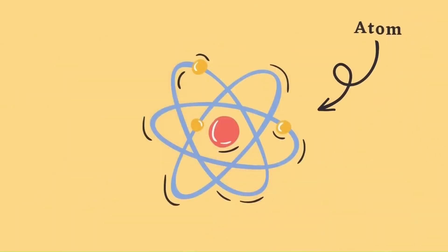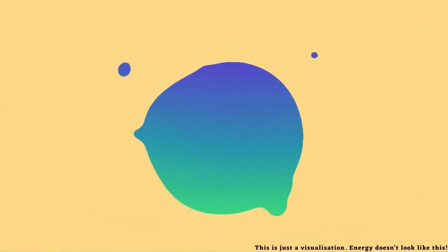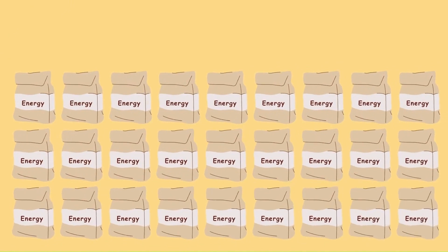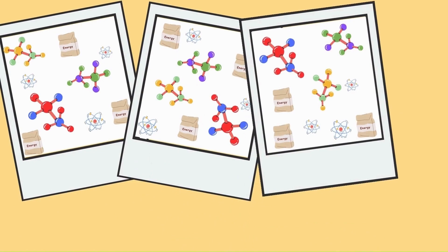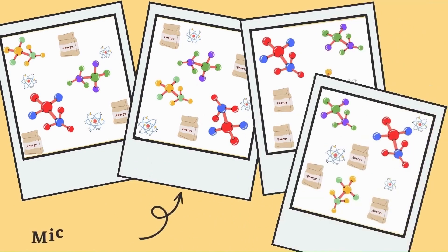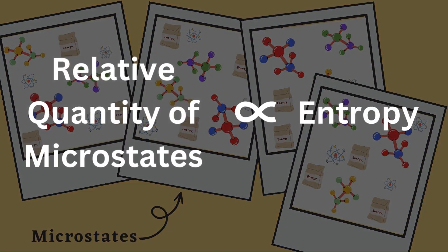To understand this, let's get down to basics. Everything you see around you can be broken down into molecules. Each molecule can be broken down into atoms. Similarly, even energy can be broken down into indivisible packets known as quanta. These atoms, molecules, and quanta can be arranged in so many different ways within a system. Each arrangement is called a microstate, and the relative quantity of these arrangements defines entropy.